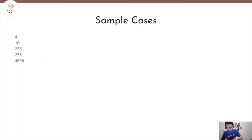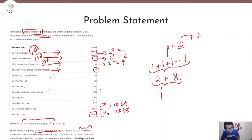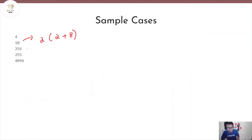Let's move on to the sample cases. For P=10, the answer is 2 — minimum 2 menu items have to be ordered to attain price 10, one of price 2 and the other of price 8. Now in the second case, P=256: if you look at the menu, we actually have a menu item that is exactly price 256. So the minimum number of menus to meet the price 256 is just one menu item of price 256.